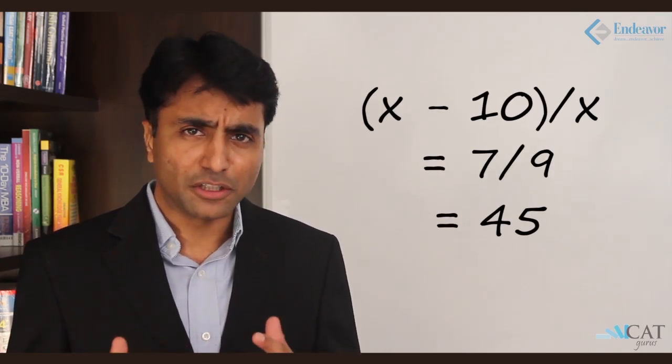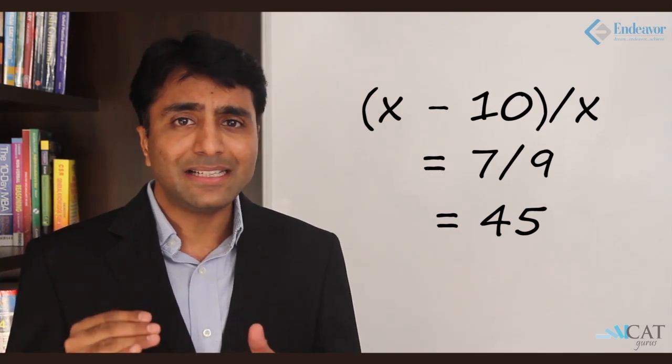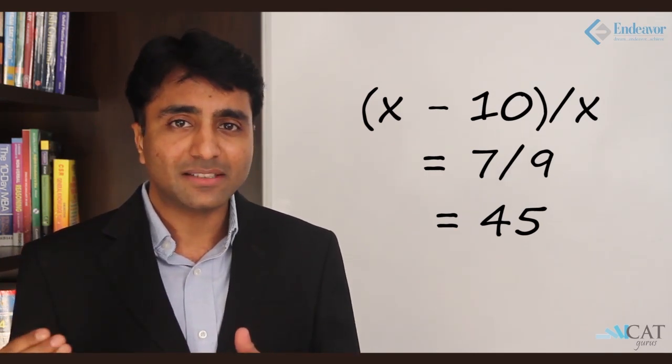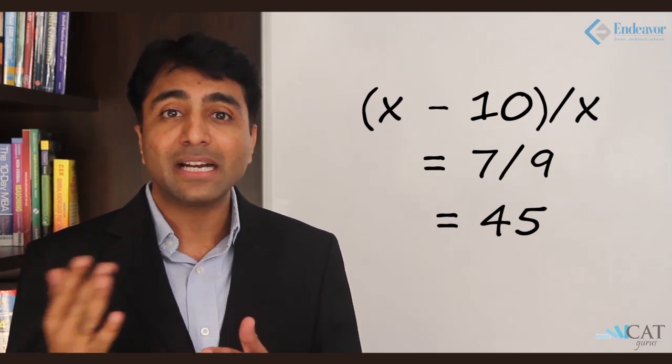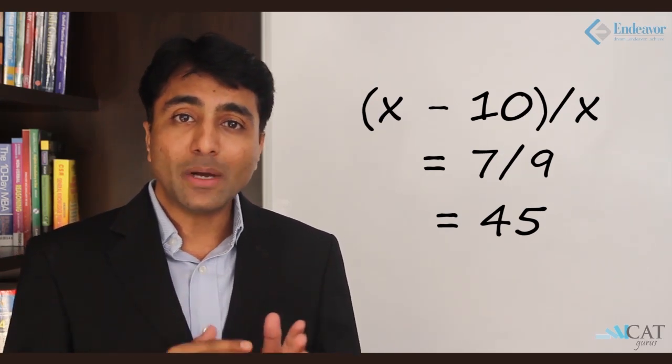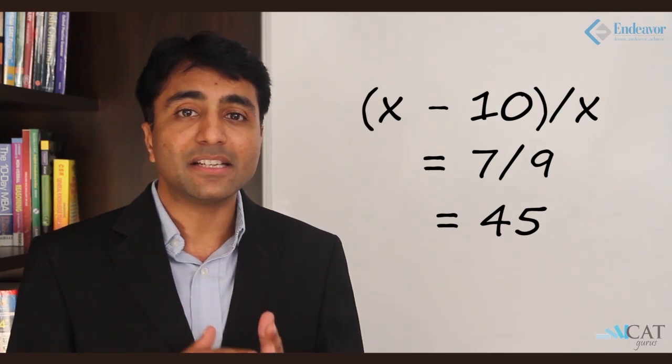Processing this further, I get 9x minus 90 equals 7x. Taking 7x to the left-hand side and 90 to the right-hand side, I get 2x equals 90, and therefore x equals 45. So the original quantity of wine in the container was 45 gallons — from which 10 gallons were removed twice and replaced with water.